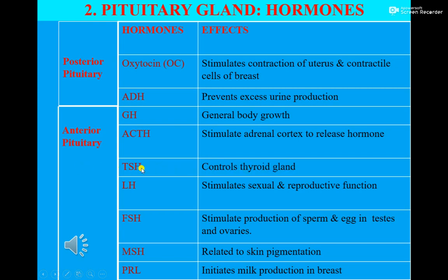LH, luteinizing hormone, stimulates sexual and reproductive function. In females, this hormone initiates the process of ovulation and promotes the development of the corpus luteum. In males, this hormone stimulates the interstitial cells for the secretion of the male sex hormone testosterone.